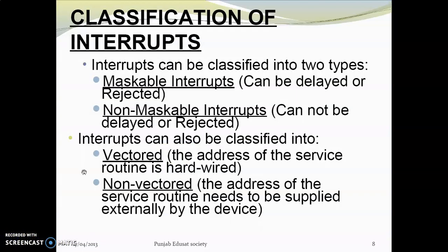This is the classification of interrupts. There are two types: maskable interrupts and non-maskable interrupts. For maskable interrupts, we can mask the signal — if we want to delay or reject the request, we can reject the signal. For non-maskable interrupts, we will not be able to reject the signal.